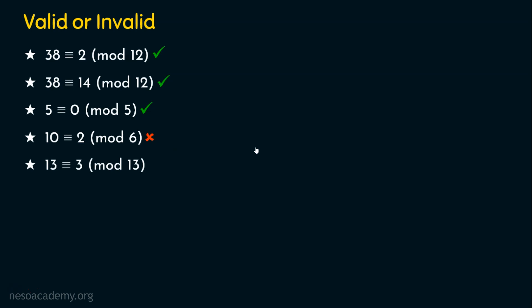Fifth: 13 is congruent to 3 mod 13 — 13 divided by 13 gives remainder 0, not 3. Invalid. Sixth: 2 is congruent to minus 3 mod 5. When 2 is divided by 5 the remainder is 2 itself. And 2 can be written as minus 3, because minus 3 plus 5 equals positive 2. So it can be either positive 2 or minus 3 — this is a valid congruence.